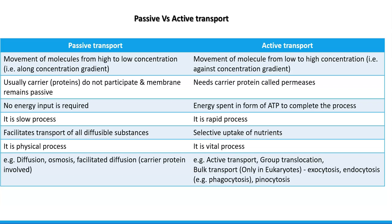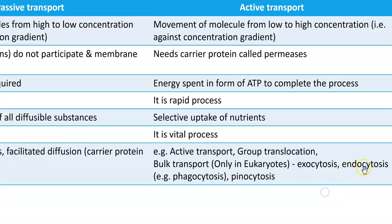Examples of passive transport include diffusion, osmosis, and facilitated diffusion. Only in facilitated diffusion may a carrier protein be involved; in diffusion and osmosis there is no carrier protein involvement. In active transport, there are various kinds, including group translocation and bulk transport. Bulk transport operates only in eukaryotic organisms and includes exocytosis, endocytosis, phagocytosis, and pinocytosis.